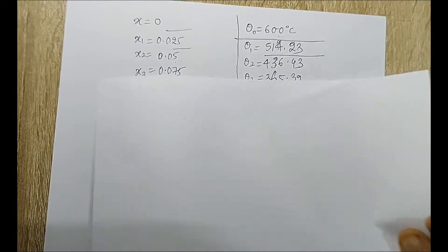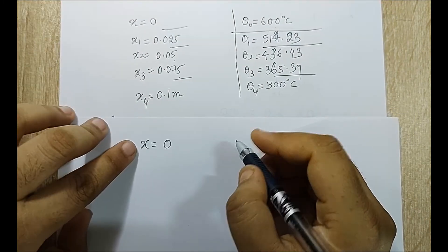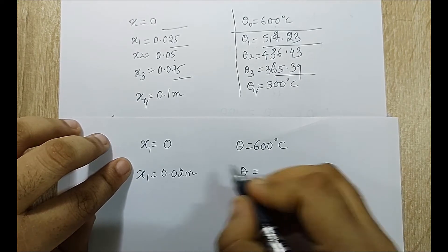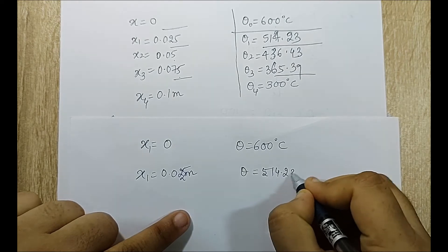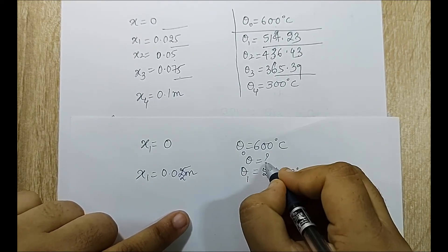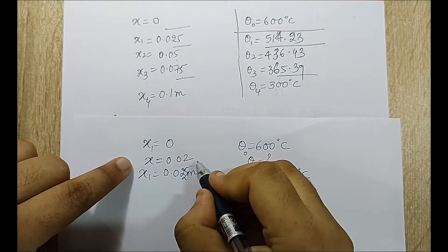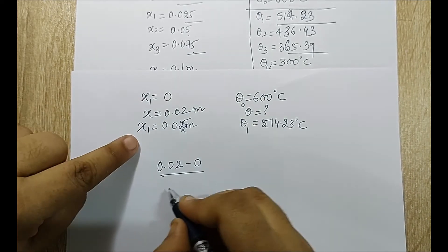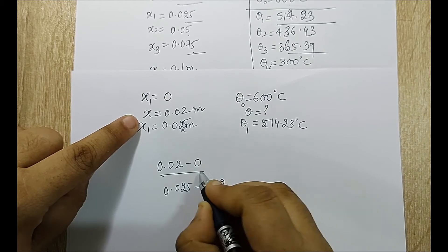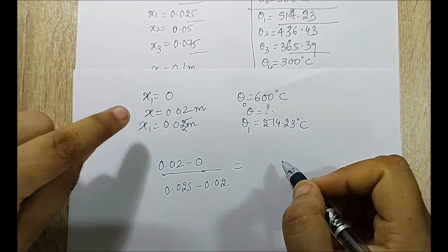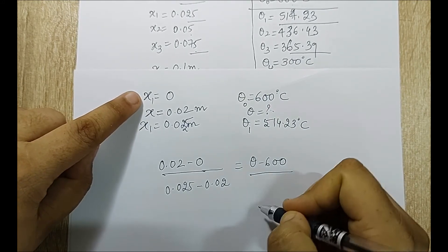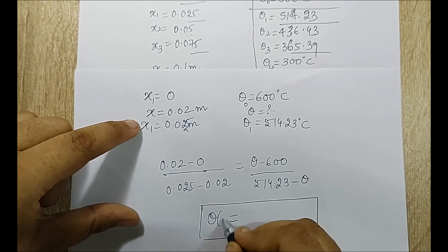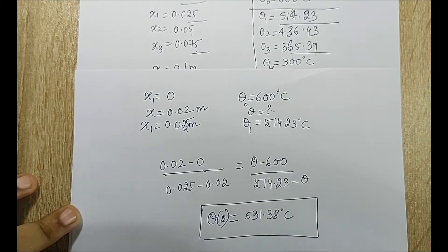For x equals 0.02 meter, using linear interpolation between x equals 0 (theta equals 600) and x equals 0.025 (theta equals 514.23): setting up the interpolation ratio (0.02 minus 0) divided by (0.025 minus 0) equals (theta minus 600) divided by (514.23 minus theta). Solving this gives theta at x equal to 0.02 meter as 531.38 degree Celsius.